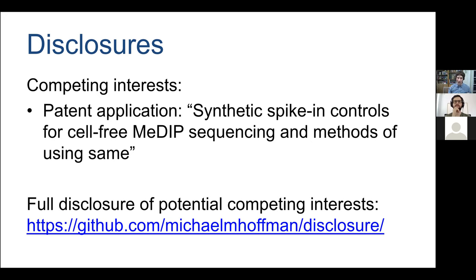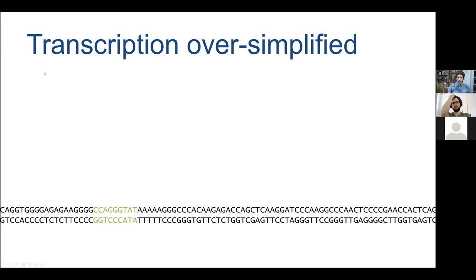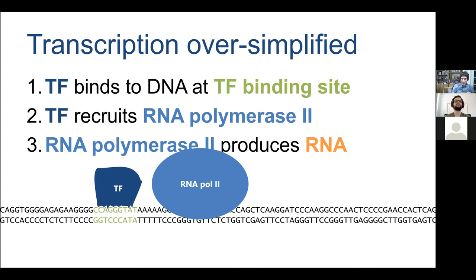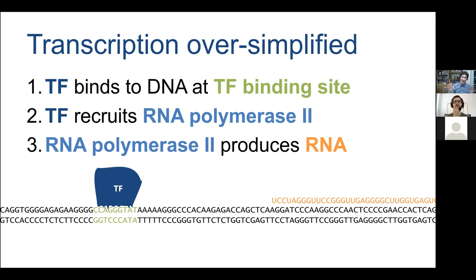Here is an oversimplified model of transcription in eukaryotes, adapted from Wyeth's Canadian Bioinformatics Workshop slides. We have a sequence with transcription factor binding sites — a transcription factor binds the DNA, recruits RNA polymerase II, which produces RNA, and somewhere downstream results in function. Making predictions of how all of this happens is a very challenging problem.